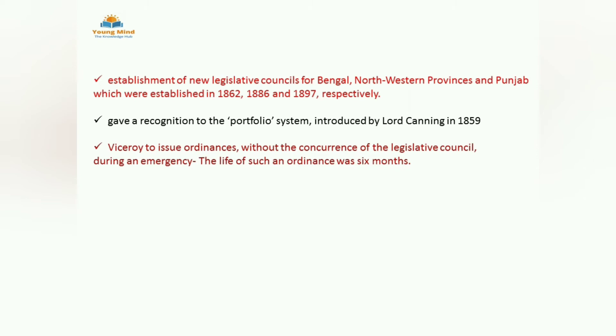The Viceroy also got the power of ordinance. At present, the power of ordinance is with the Governor and President — Article 213 is for the Governor and Article 123 is for the President. The ordinance has a time of six months. This is all related to the 1861 Act.